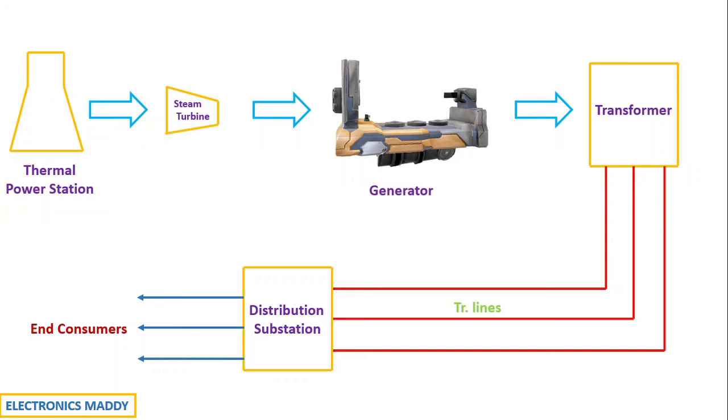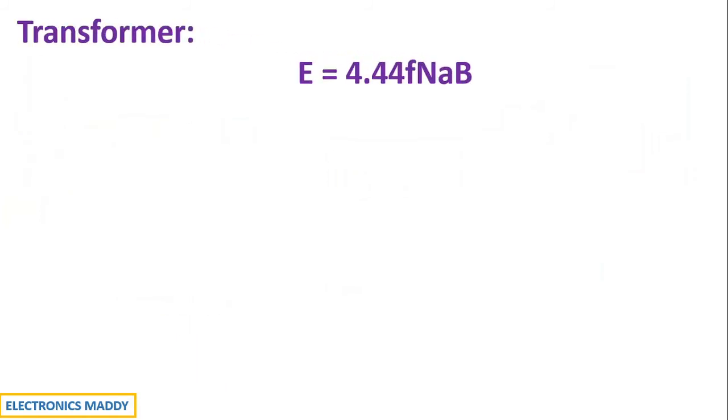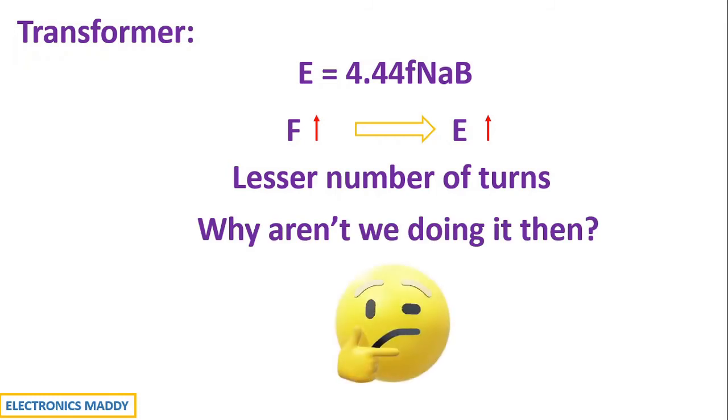In order to understand this, let us consider the effect of frequency with transformer. The EMF induced in secondary of the transformer is given by E is equal to 4.44 F Na into B. Now, as the frequency is very high, if you are considering the frequency to be very high of 1000 Hz or 1500 Hz, higher will be the EMF induced. Because they are directly proportional. Therefore, with lesser number of turns, we can achieve more voltage at the secondary. But why aren't we doing it then?